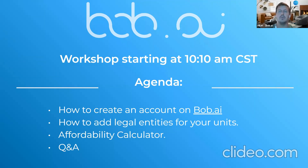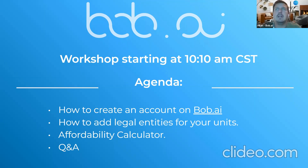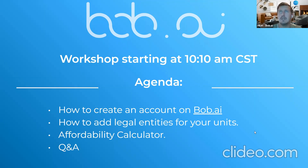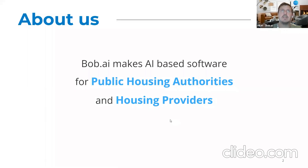We're going to go through creating your account and how to separate legal entities for each RAFTA. Later I'm going to show you an affordability calculator that we have for basically all the agencies in the US — this is something we are releasing now. You can see the maximum rent you can get per unit, so let's just go through it.